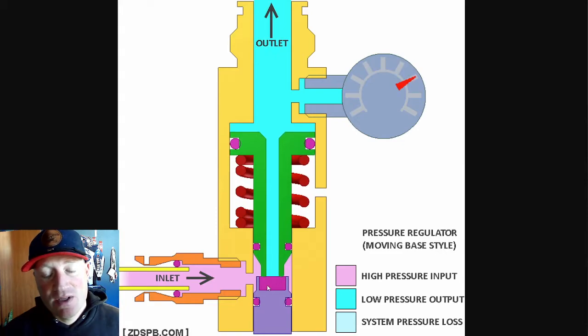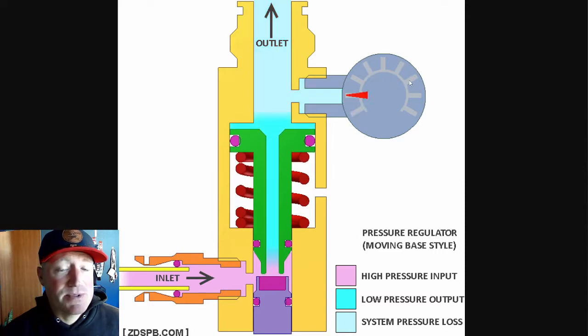there's going to be a seat that the face of the piston is going to hit against and seal against. It's going to stop building pressure. So you can see the pressure stops here.